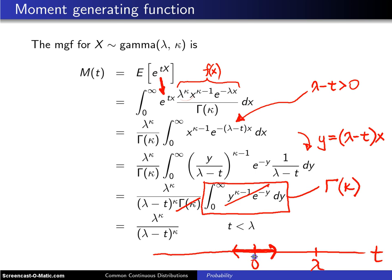Here is that neighborhood about zero. The moment generating function exists in that neighborhood because that integral converged for all t values that are less than lambda so the moment generating function exists and in this case has a nice closed form to it.